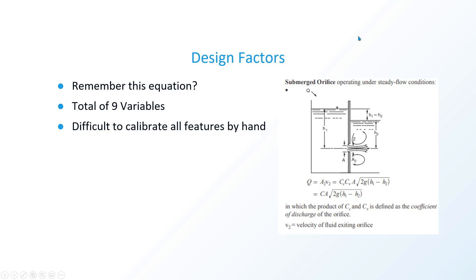The design uses the submerged orifice equation, which has a total of nine different variables: Q, A₂, V₂, Cc, Cv, A, and then gravity and both heights used in the equation. With nine variables, it's very difficult to calibrate an orifice, tank, and riser situation by hand — especially with the different coefficients and the different sizes of risers and orifice shapes, whether notched, V-notched, or rectangular.